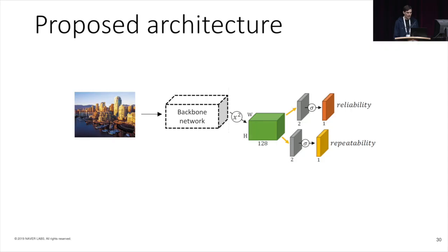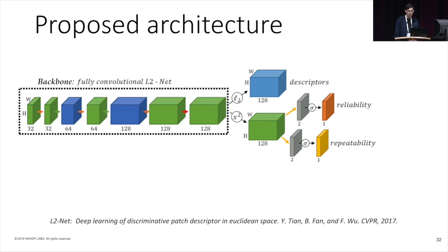Here is the architecture we propose to estimate repeatability and reliability densely at each pixel. At the end, we only keep locations that are both reliable and repeatable. Since reliability depends on the keypoint descriptor itself, our network also computes the descriptor at each pixel densely. Regarding the network backbone, we use L2Net as it is small and compact. We modified it a bit to make it fully convolutional so that it preserves the image resolution at all stages.